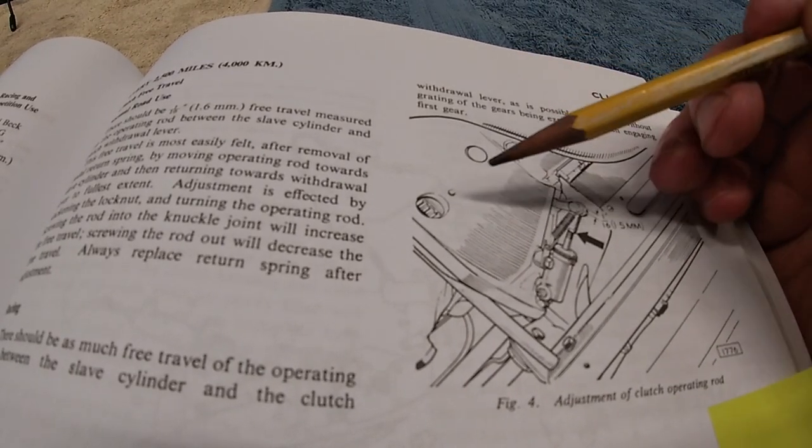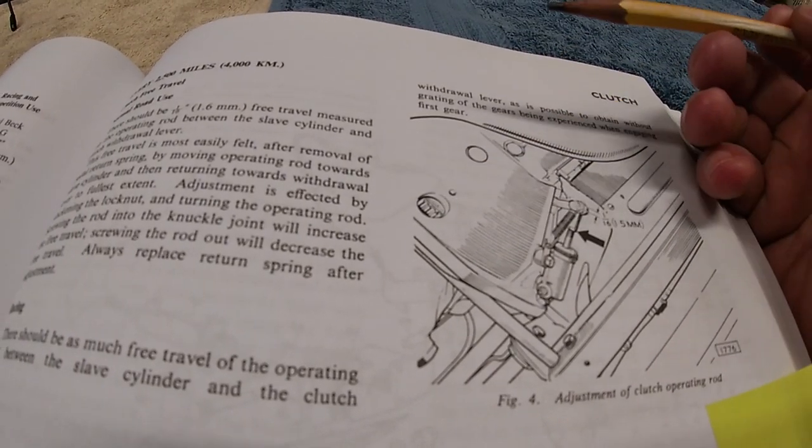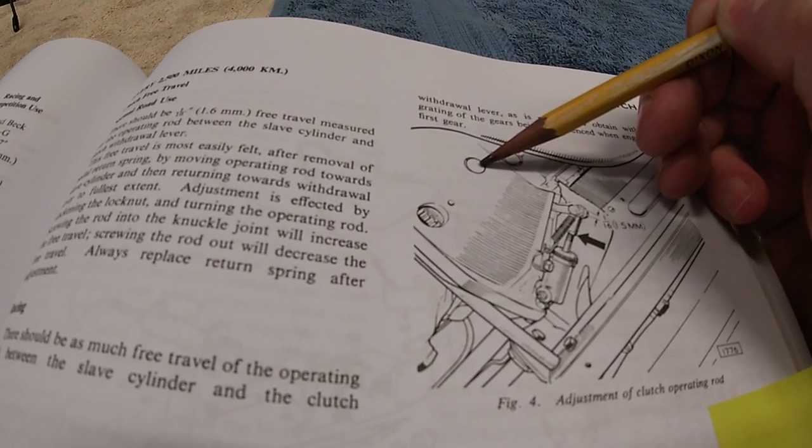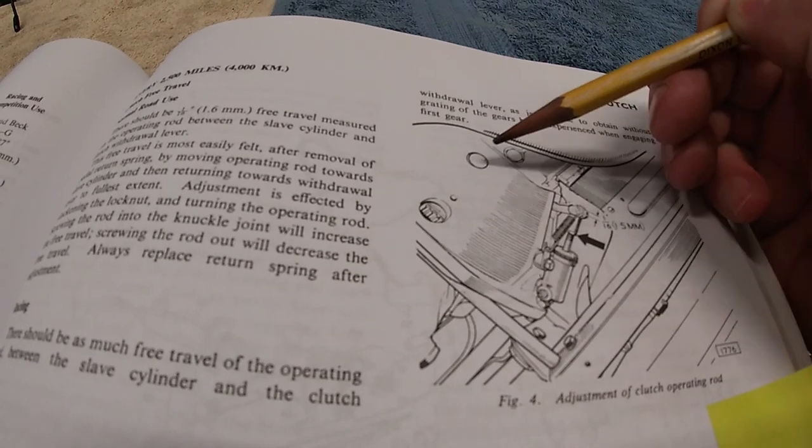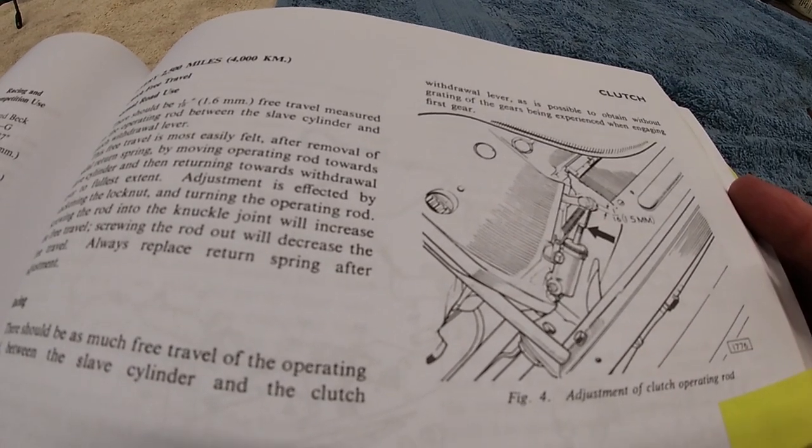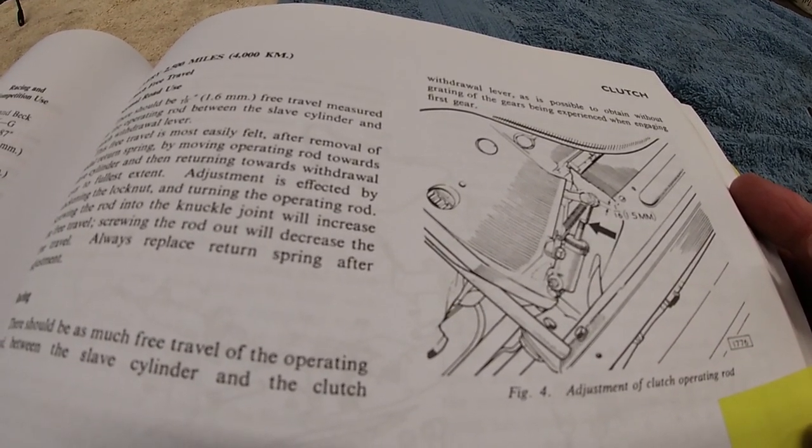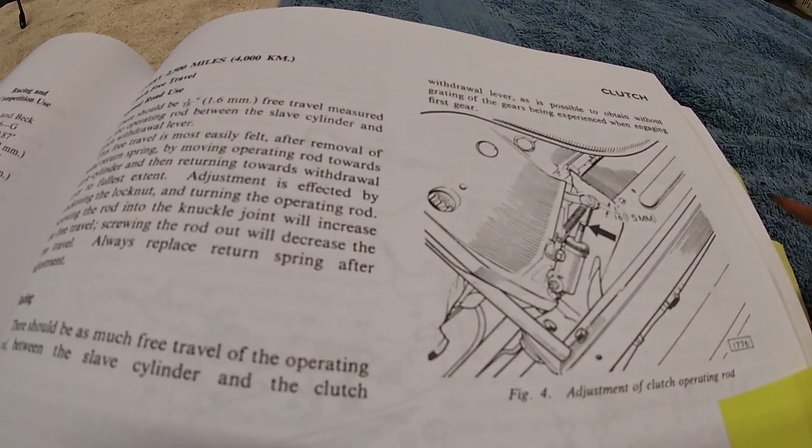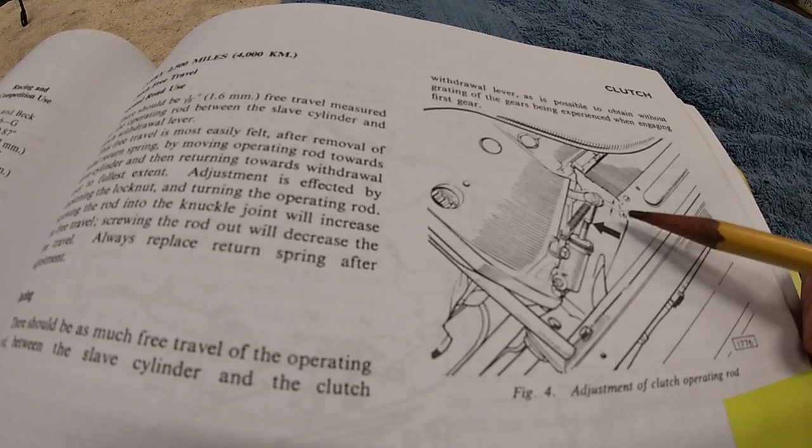You can actually see the position of the thrust bearing through this hole here in the bottom of the casing. That also is quite useful because you get to see where the thrust bearing is relative to the pressure plate. It's not the best of views, but you can actually see something.